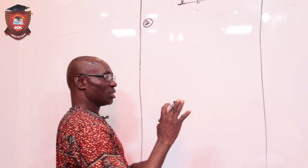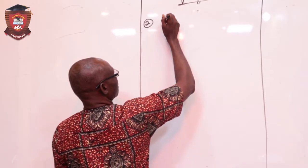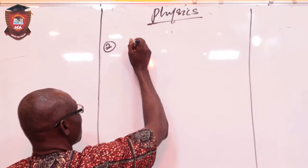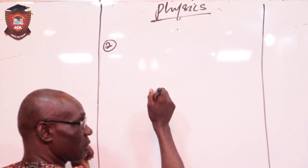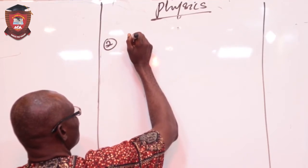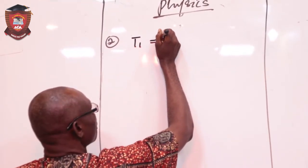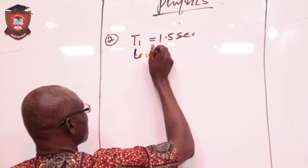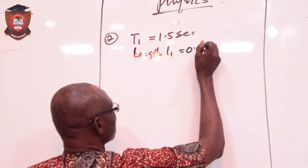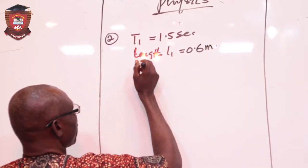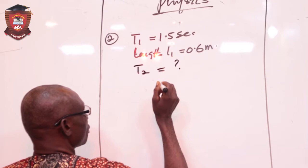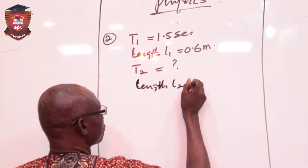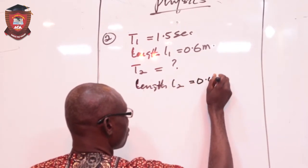From this question, let's identify the parameters. First, we have the simple pendulum of length L. So we have 2 lengths and 1 period. So we have here, period 1 is 1.5 seconds. Length L1 is 0.6 meter. Then we are asked to obtain period 2, when its length L2 is now 0.4 meter.